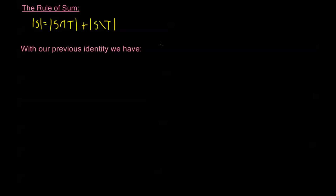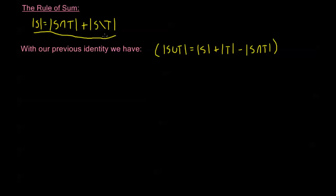Combining this with our previous identity — |S∪T| = |S| + |T| − |S∩T| — I substitute the rule of sum expression for |S|. The S∩T terms cancel with the negative S∩T, and I'm left with: the order of S union T equals the order of T plus the order of S minus T.